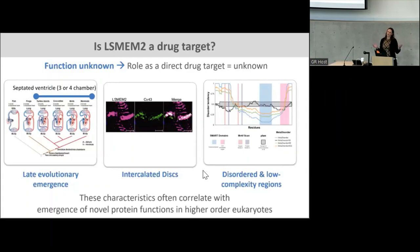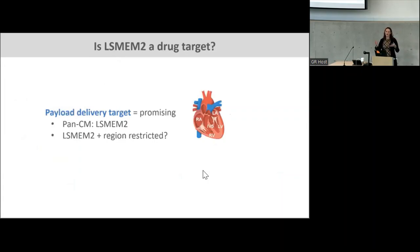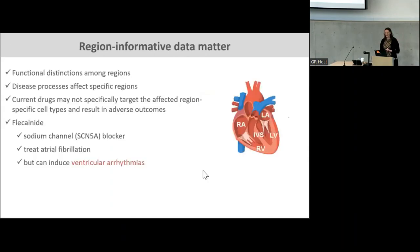We've identified a new protein no one's ever seen before in the heart. We don't know what it does, and we don't know if it's a direct drug target, but it definitely has promise as a payload delivery target. If you have to deliver a therapeutic payload to a specific cell type, one of the most valuable things you can have is the mailing address — you don't just want the zip code that points to the heart. There may be a time where you want to deliver that payload directly to the myocyte — maybe not just to the left ventricle myocytes, but specifically to the right ventricle because your left ventricle isn't affected. So we wanted to know if our data could give us some potential region-restricted proteins that future drug therapy could exploit. We know there are functional distinctions among regions, and in many diseases, they can affect only specific regions. Maybe it would be advantageous to deliver your therapy only to the sick myocytes in the sick region of the heart.